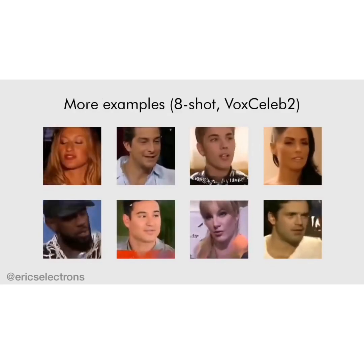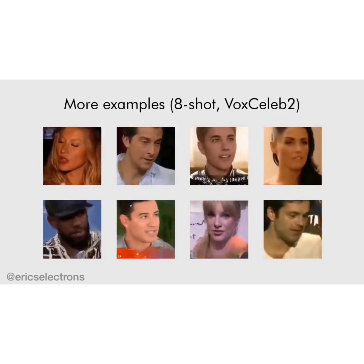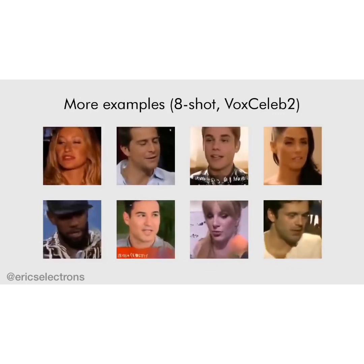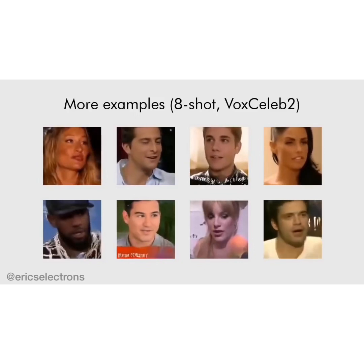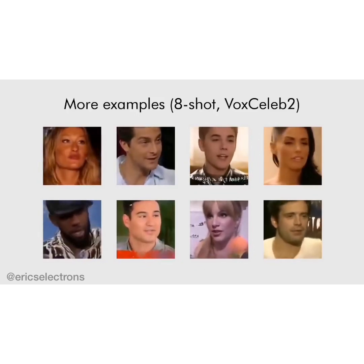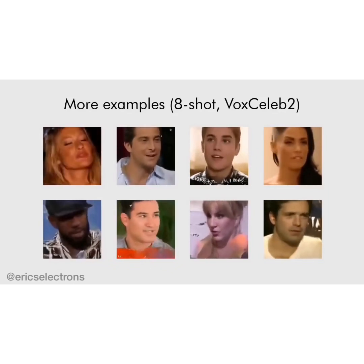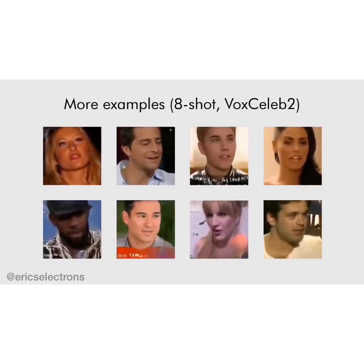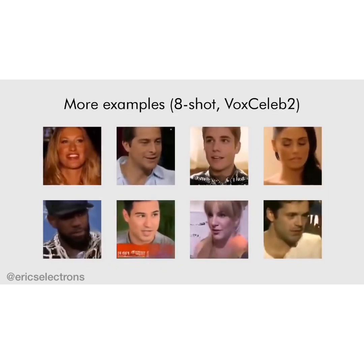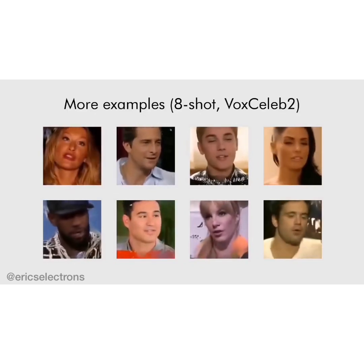Here we show more results for holdout identities on the VoxCeleb2 dataset that were unseen by the system at the meta-learning stage. These talking head models were obtained using eight frames, although in some cases there was limited diversity between the head poses in those eight frames.